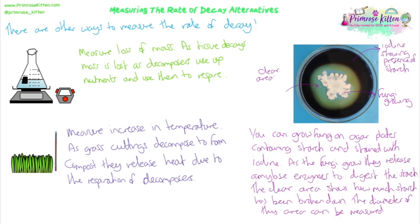Hopefully that summary has helped. We've talked about microorganisms and what decay and decomposition is, how microorganism decay can be used to create biogas, how it can be used to fertilise soils, and some different ways that we can measure the rate of decay practically.